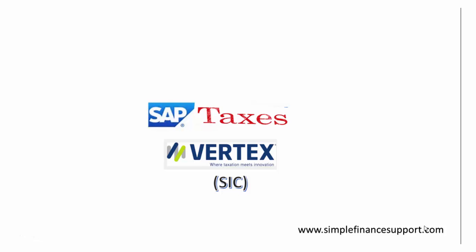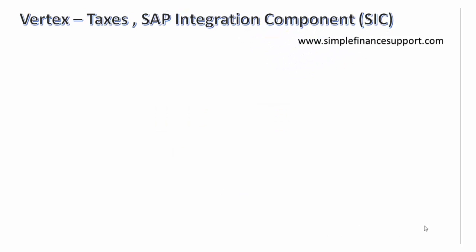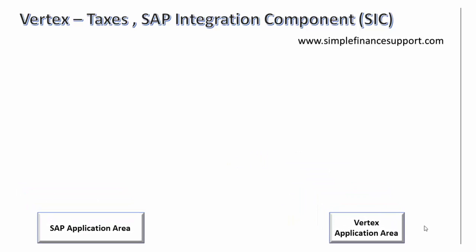Welcome to SAP Taxes. Today we would like to discuss the SAP integration component for Vertex. The SAP application area and Vertex application area are integrated back and forth, meaning data from the SAP application area flows to the Vertex application area and tax-related decisions are returned back into the SAP application area. We will see end-to-end how the SIC — the SAP Integration Component — is linked with the Vertex application area.